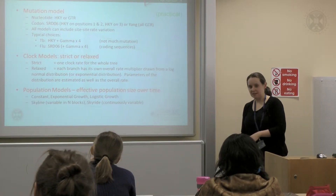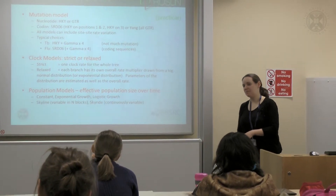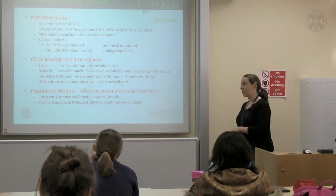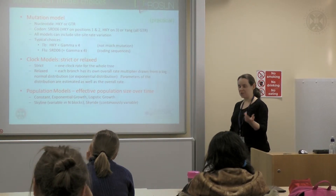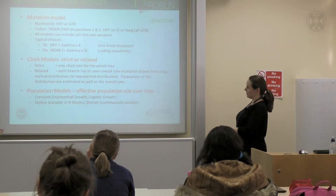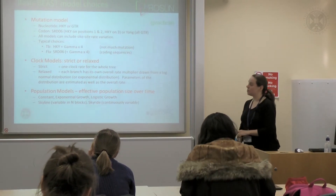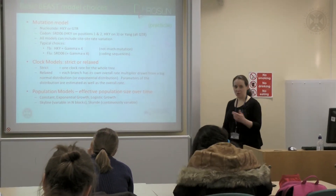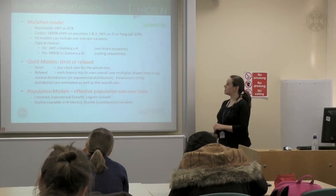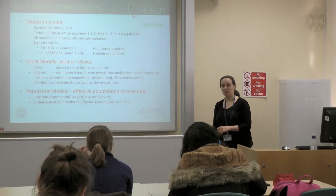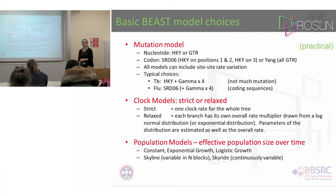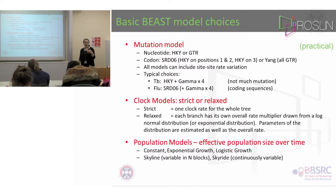Within BEAST, as I mentioned before, there are quite a lot of sub-models. The first of which you will have heard about this morning is the mutation model. It's the model which describes the A to G rate and the C to T rate.